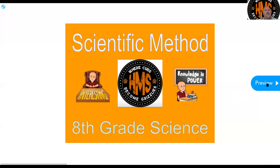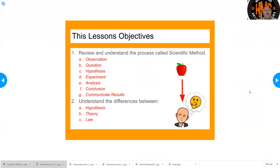So first, we're going to start off with the title, of course. Then on this blue button on preview, you're going to move to the next thing — the lesson objectives. So being able to learn about the scientific method. Hopefully it's just a review for you as an eighth-grader, but let's make sure that we get all the steps correct.